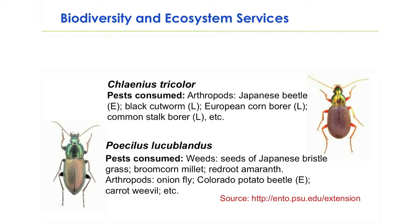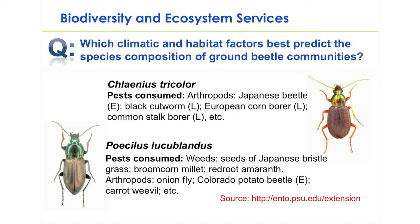Second, ecologists are interested in which climatic and habitat factors best predict the species composition of ground beetle communities. Ground beetles can be really good indicators of ecosystem function and ecosystem health. They provide a number of ecosystem services, including consumption of pest arthropods as well as many weed species.